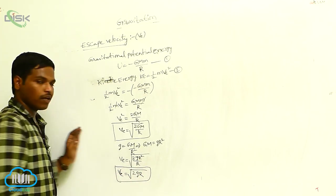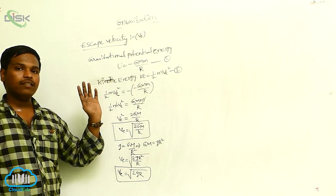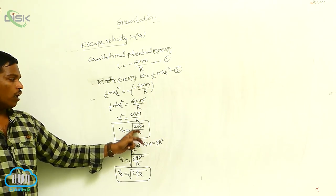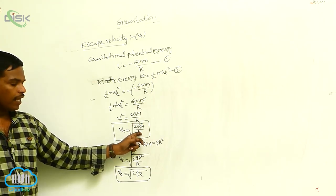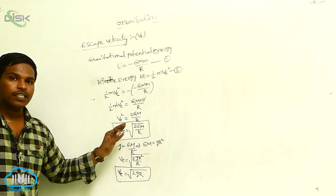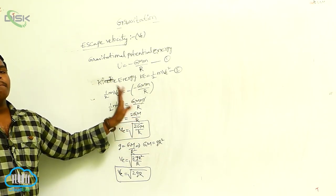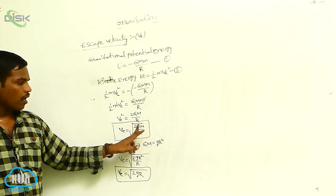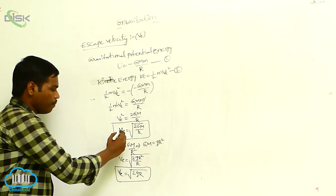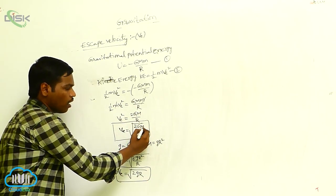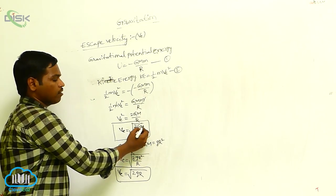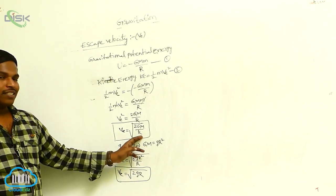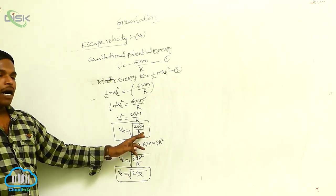Ve equals the square root of 2gR. This is the escape velocity of an object from the earth's surface. If we observe this equation, Ve equals under root 2GM by R, then the escape velocity of an object does not depend on the mass of the object. It depends on the mass of the earth or the planet and also on the radius of the planet.